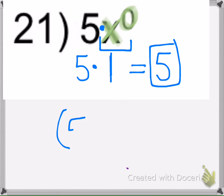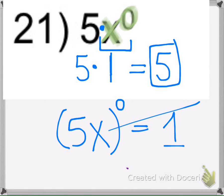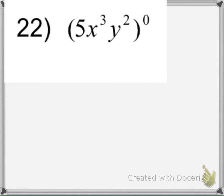If the answer to this problem was supposed to be 1, it would look like this. This equals 1, but the problem didn't have the parentheses. So the 0 is only going with the x.